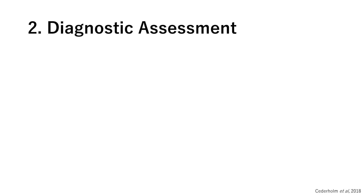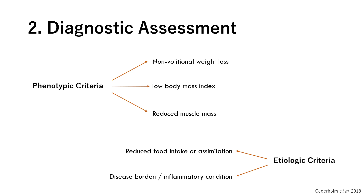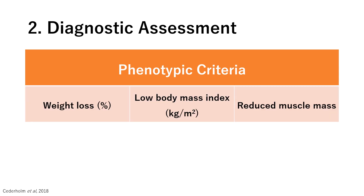The diagnostic assessment involves two criteria: the phenotypic criteria and the etiologic criteria. The phenotypic criteria includes non-volitional (unintentional) weight loss, low body mass index, and reduced muscle mass. Under the etiologic criteria, we have reduced food intake or assimilation and disease burden or inflammatory condition. For diagnosis, the patient must meet at least one criterion from both groups.